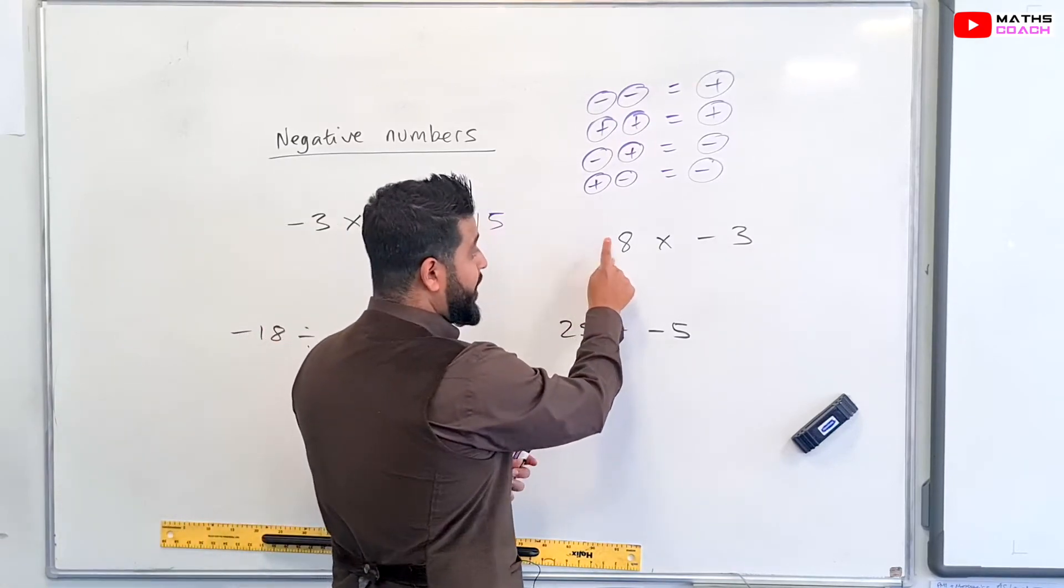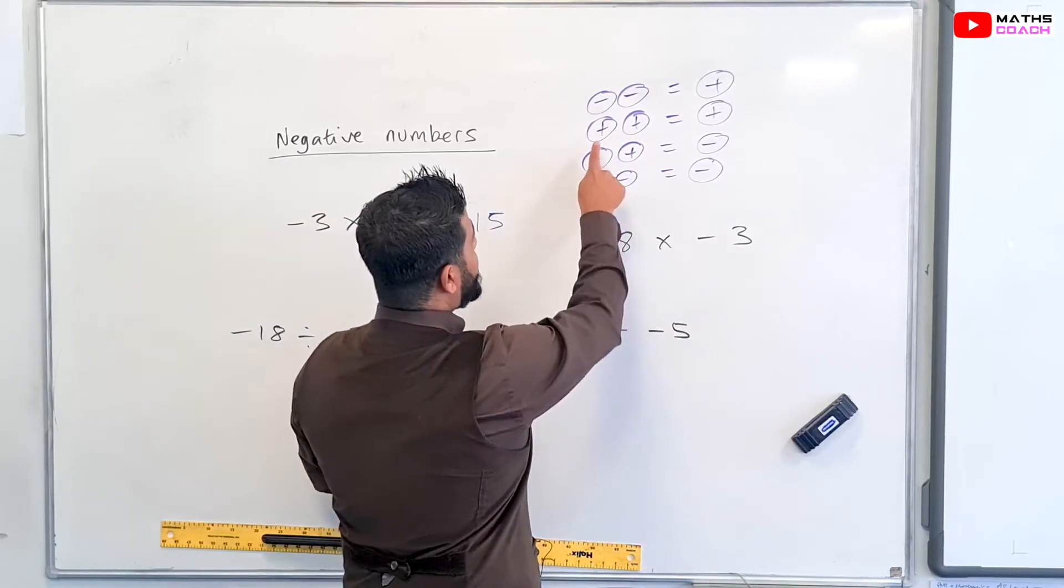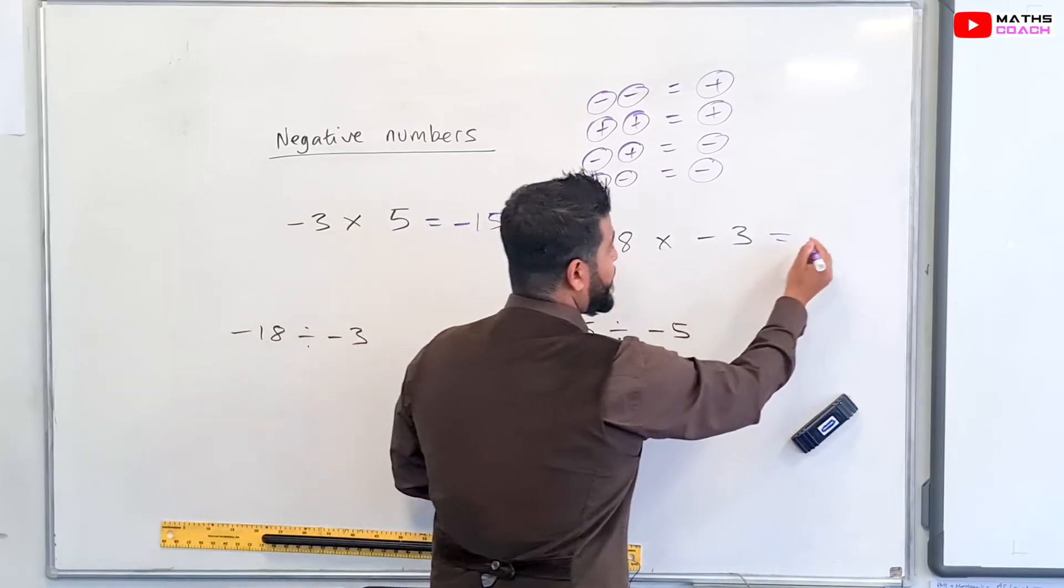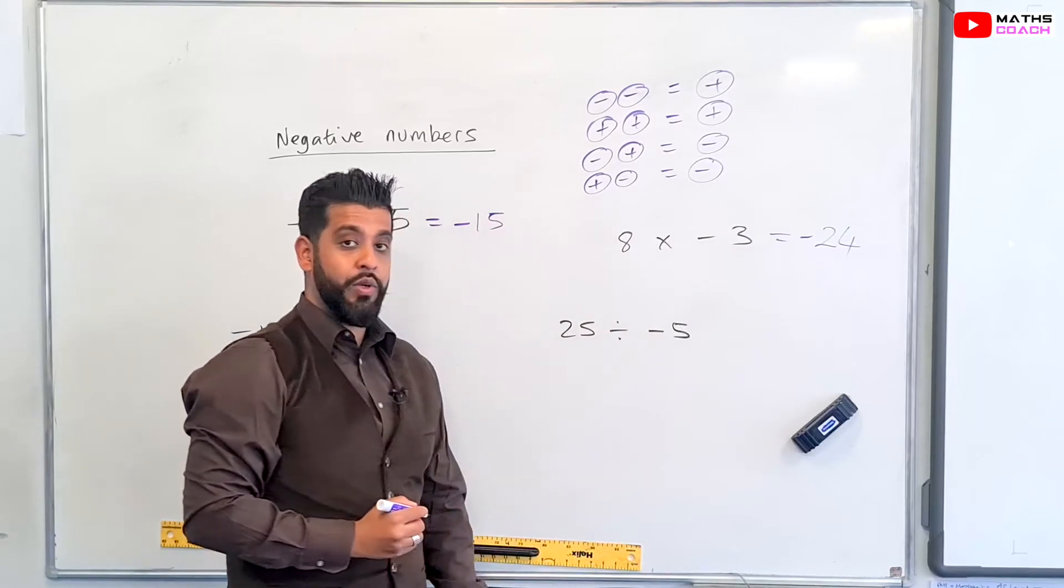So here we have a positive number, a positive eight times by a negative three. So therefore, positive times by a negative. So the answer to eight times three, we know is 24, but the overall answer will be negative. So minus 24.